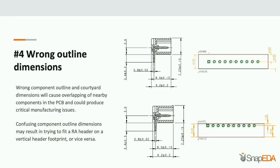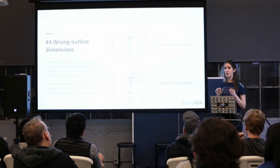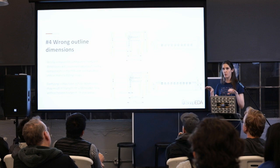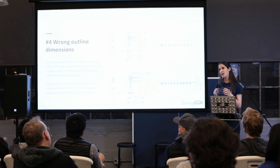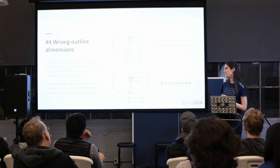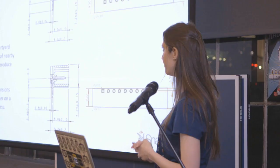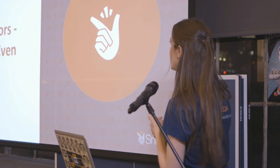Number four: wrong outline dimensions. If you have your component outline or courtyard wrong, that will cause your tool to not properly check for clearances. In one example, an engineer accidentally mistook a right-angle header for a vertical header, which affected how the component outline was generated, and because of that the clearances were wrong — the components got too close together but the tool didn't catch it.